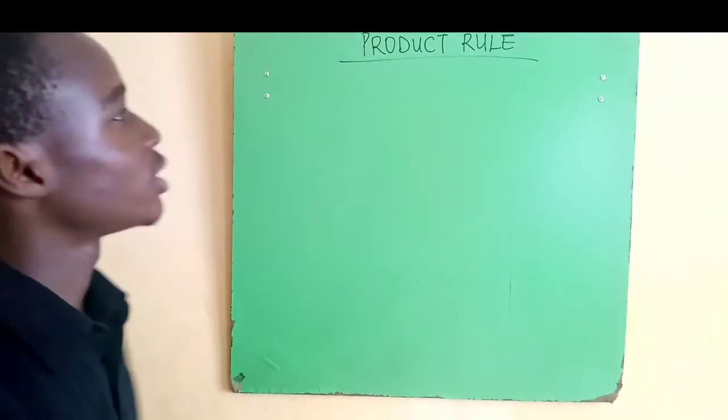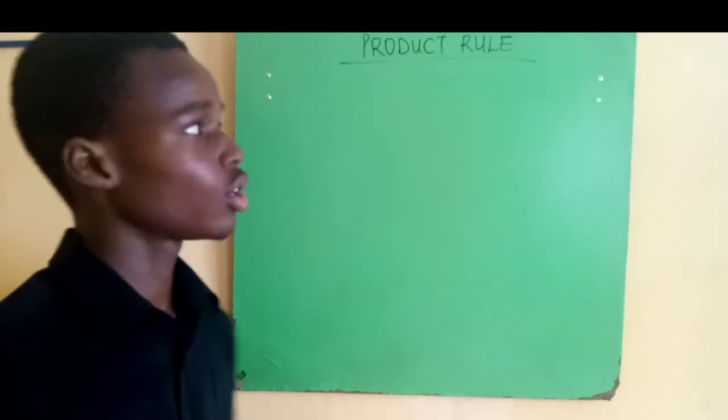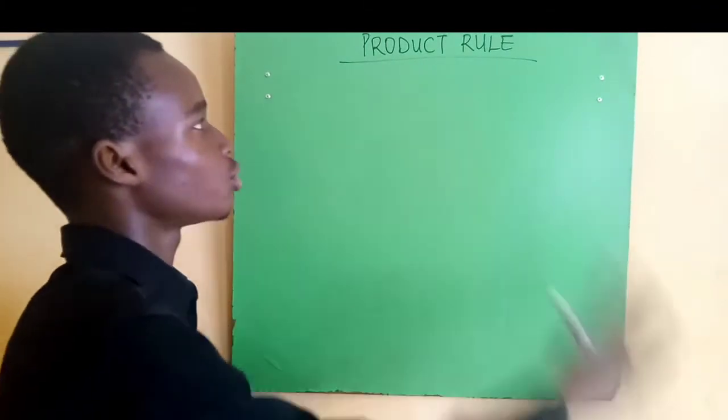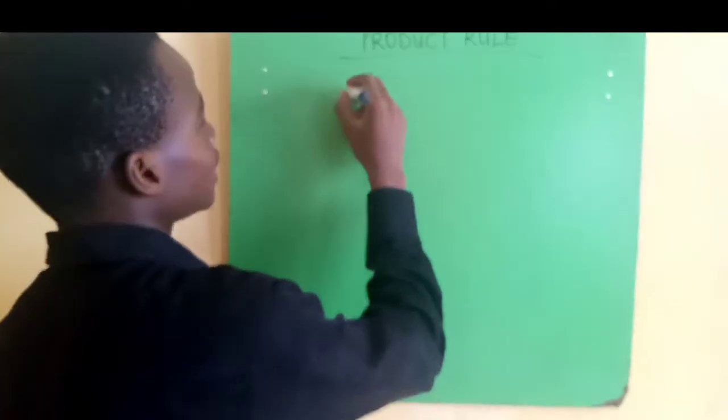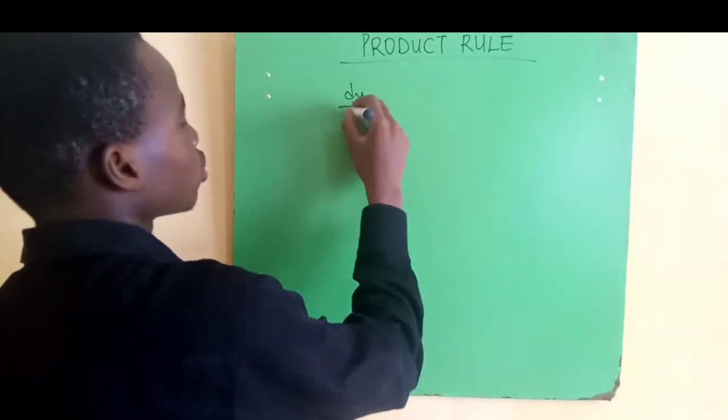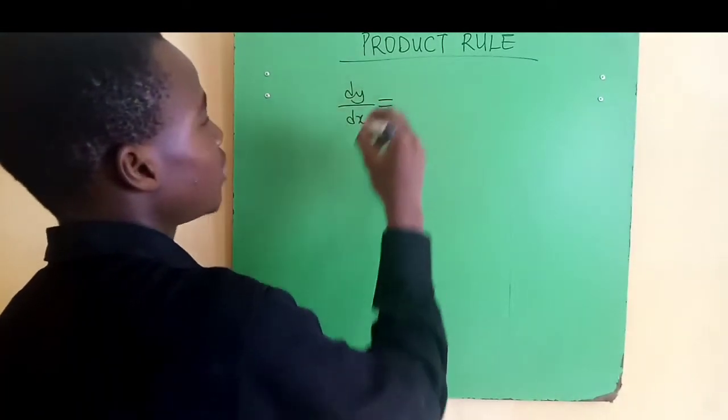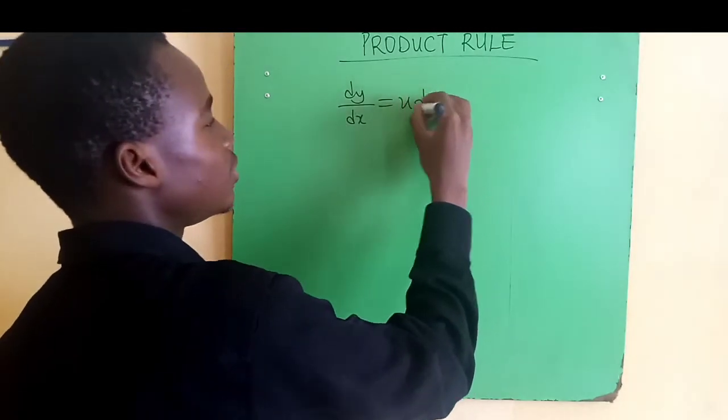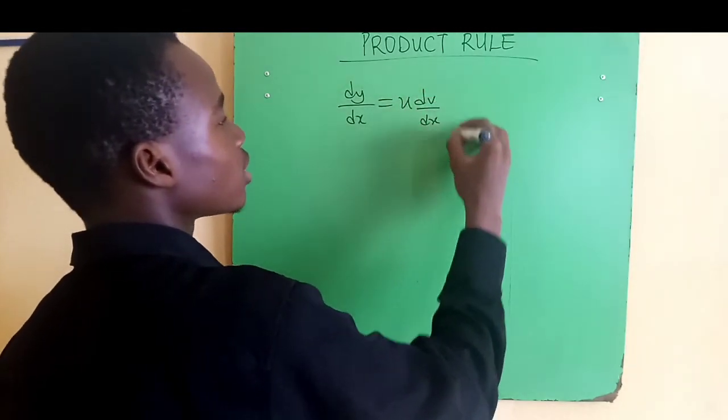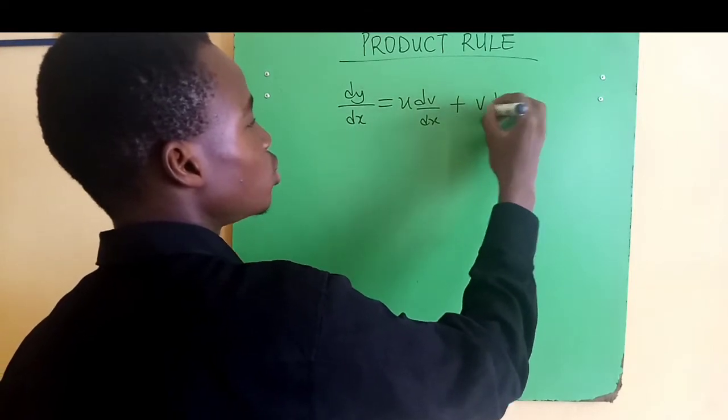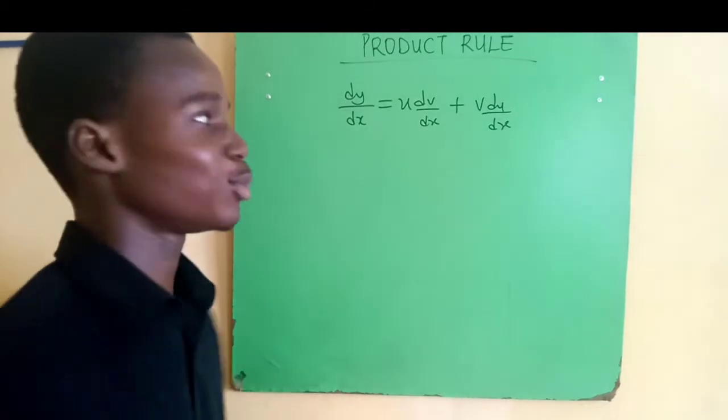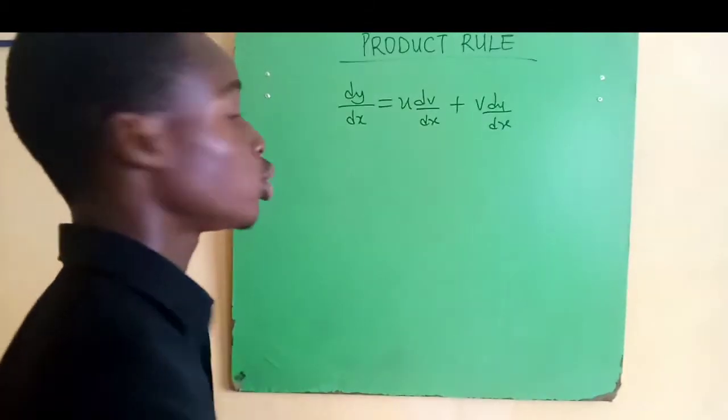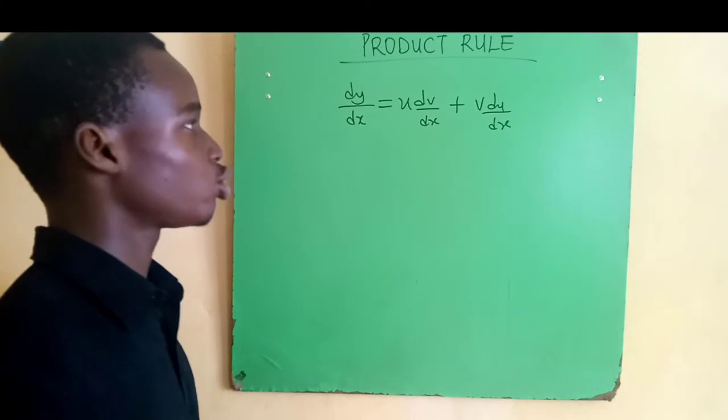Hello, welcome to Joe Academy. Today, still on the series of differentiation, I'll be teaching you on product rule. Let's get started. To get the derivative of the product rule, we have dy/dx equals u times dv/dx plus v times du/dx. Now don't be confused by this formula. It's very easy to memorize. The more you solve questions, the more you get used to it.